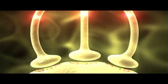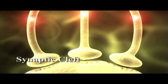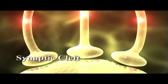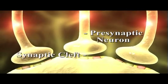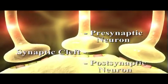A minuscule gap, called the synaptic cleft, separates the synaptic terminal of the first or presynaptic neuron from the dendrite or cell body of the second or postsynaptic neuron.